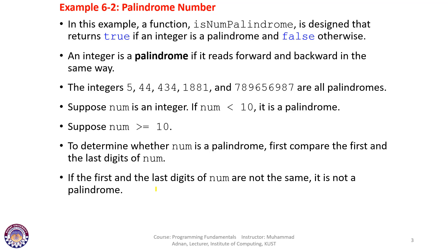We have to write the flow of computer instructions, how they are going to be executed, and then it will be easier to understand how a user-defined function solves this problem. In this example, we are going to write a function named isNumPalindrome — a function that returns true if an integer is a palindrome and false otherwise. An integer is a palindrome if it reads forward and backward the same way. The integers 5, 44, 343, 1881, and 7896569897 are all palindromes.